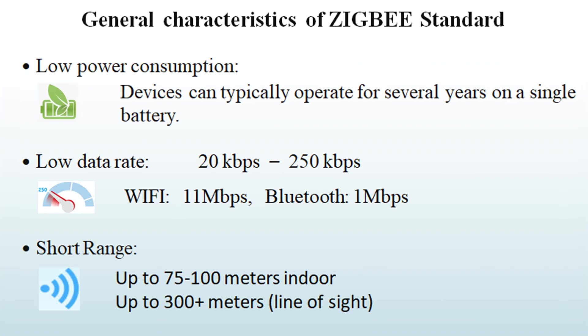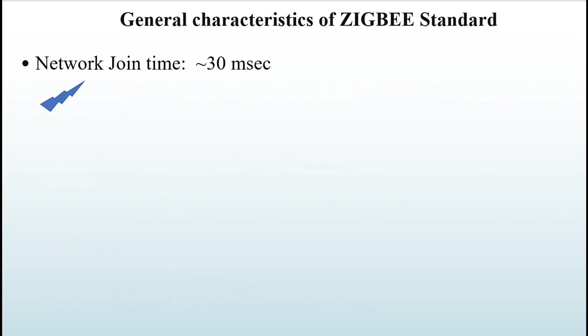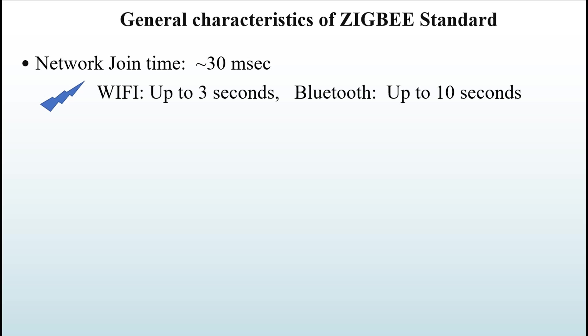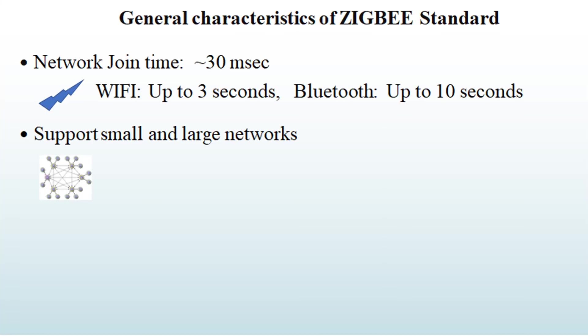The range of Zigbee devices can go up to 75 or sometimes 100 meters indoors, and up to 300 meters or more outdoors. Network join time: it takes a Zigbee device around 30 milliseconds to join a network, compared to up to 3 seconds for a Wi-Fi device and up to 10 seconds for Bluetooth.